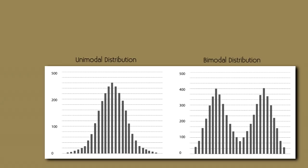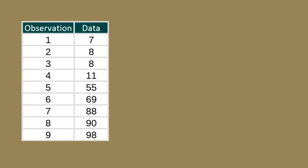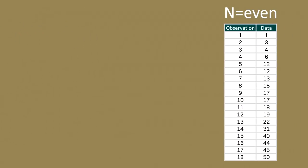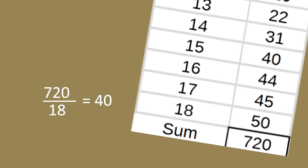The median is the midpoint of the distribution — the number such that half the observations fall above and half fall below. We find it by ordering data from smallest to largest. If n is odd, the median is the center observation; if n is even, it is the mean of the two center observations. The mean is calculated by adding all values and dividing by the number of observations.